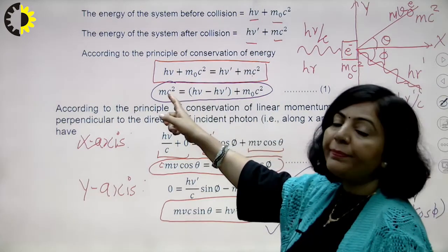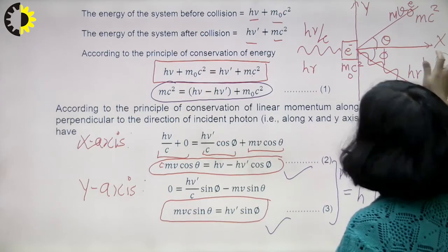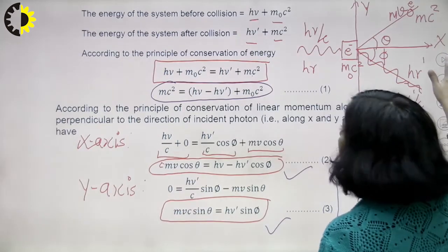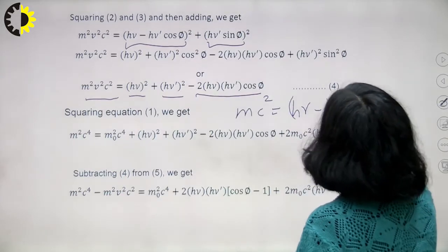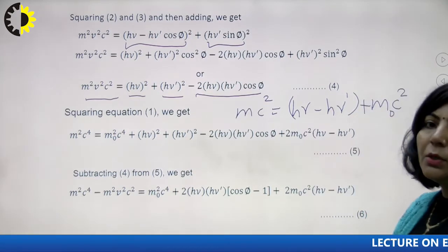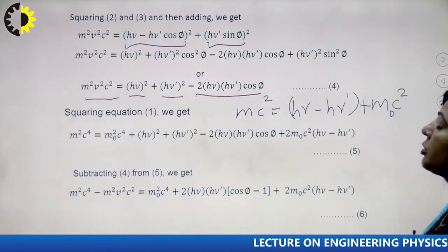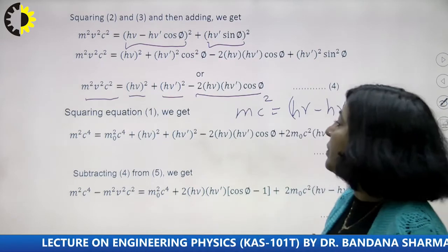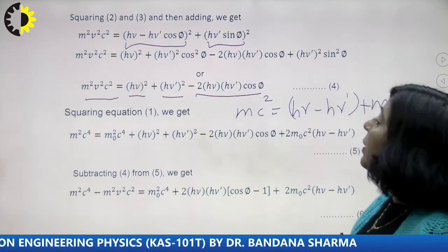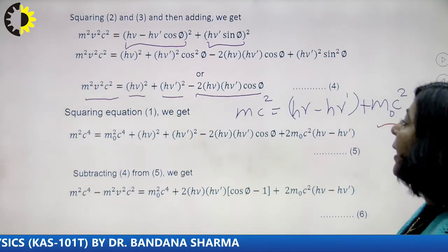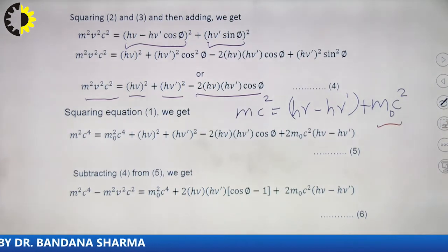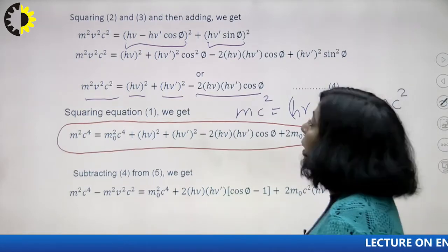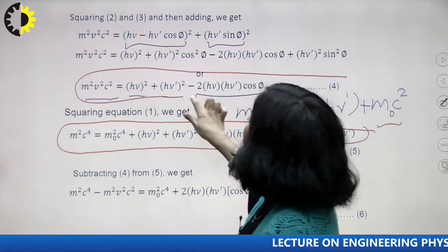From relativistic mechanics, m = m₀/√(1 − v²/c²), so m² = m₀²c²/(c² − v²). Substituting this, the left-hand side m²c²(c² − v²) becomes m₀²c⁴. Therefore, after subtraction, m₀²c⁴ cancels on both sides, and we are left with: 2h²νν'(1 − cosφ) = 2m₀c²(hν − hν').